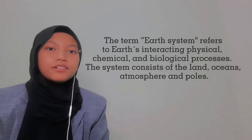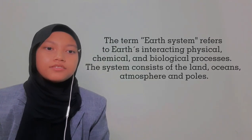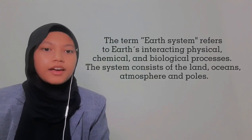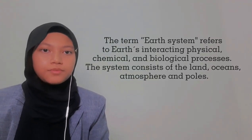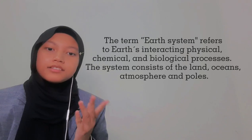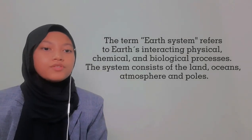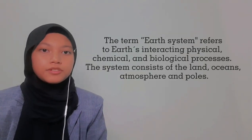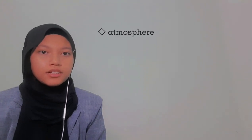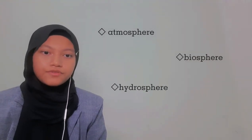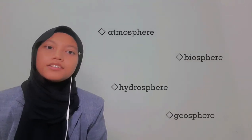The term earth system refers to earth's interacting physical, chemical and biological processes. The system consists of the land, ocean, atmosphere and poles. The earth system consists of four main components that are interconnected, which are the atmosphere, the biosphere, the hydrosphere and geosphere.